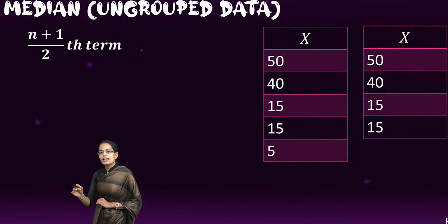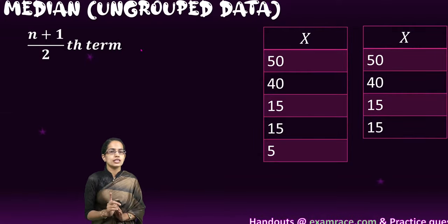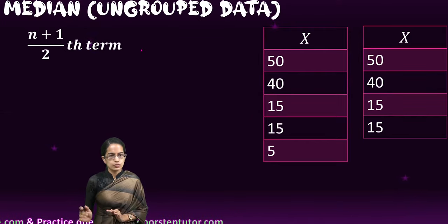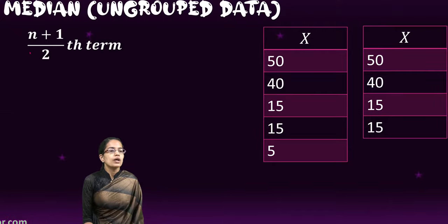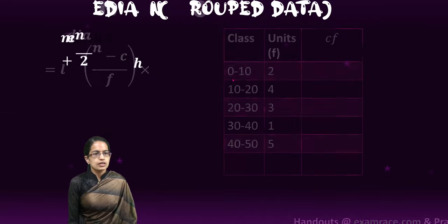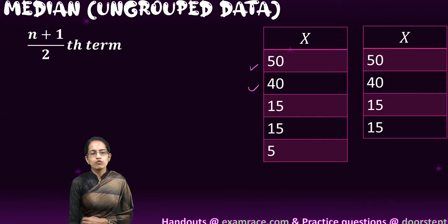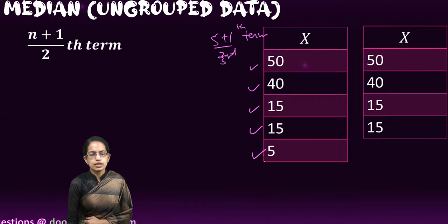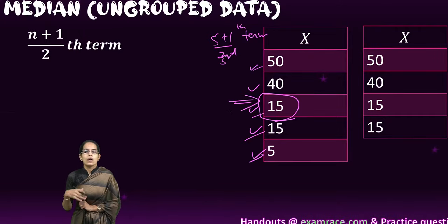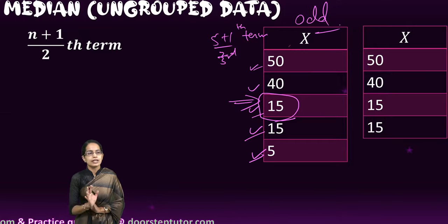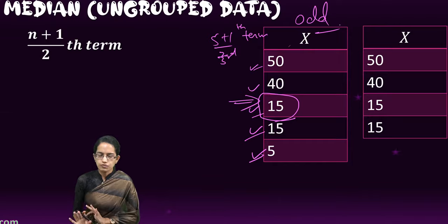To find the median, we calculate the mid value. The most important thing is we arrange the data in ascending or descending order, then apply the formula: (n+1)/2 th term. For example, with five values 50, 40, 15, 15, and 5 arranged in ascending order, the (5+1)/2 = 3rd term is the median. Counting 1, 2, 3 — the third value is 15. So the median is 15. Be very careful: don't just find the 3rd term position — find the actual value corresponding to it.